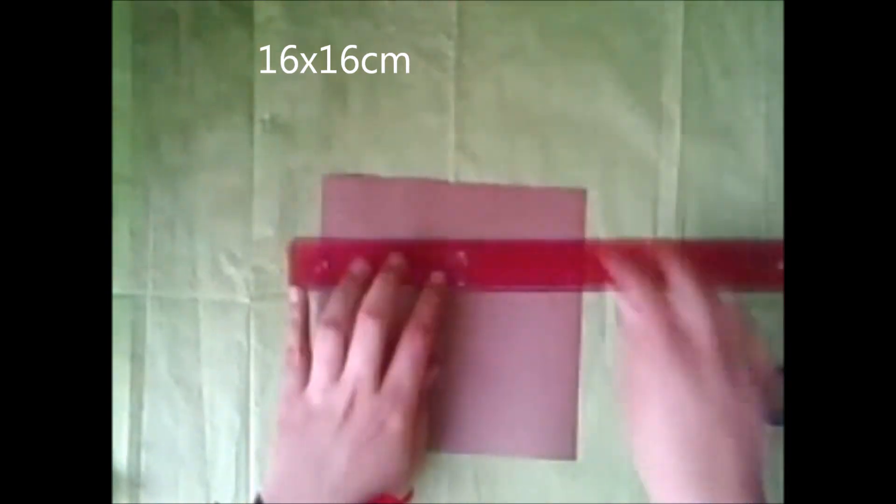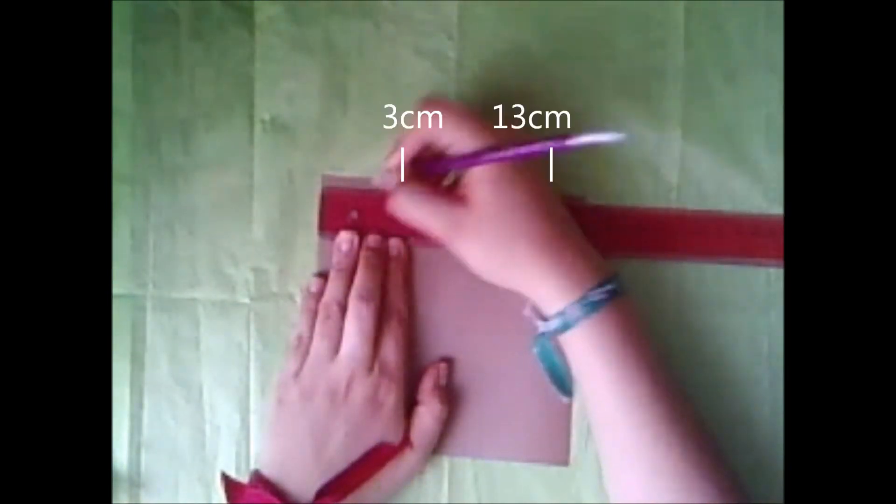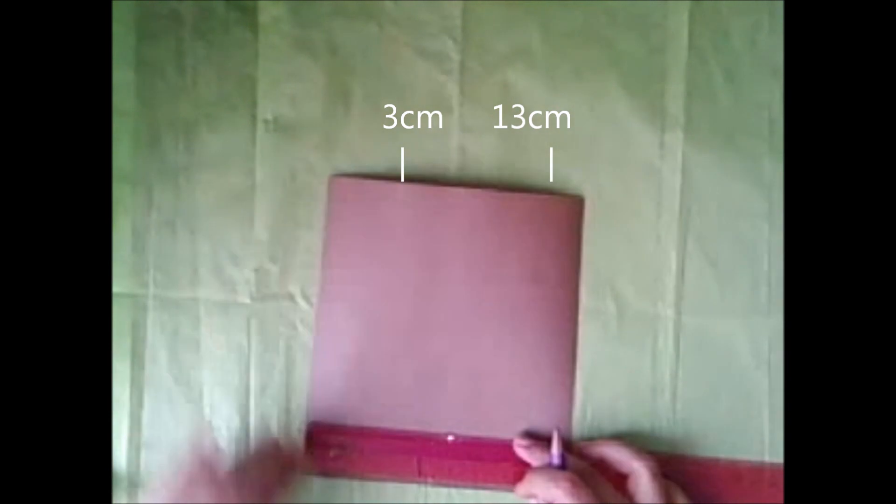En otra cartulina vamos a hacer un cuadrado de 16 x 16 cm, y haremos marcas a los 13 y 3 cm en todos los lados. Este será el cajón.